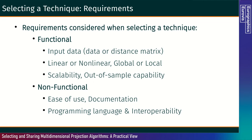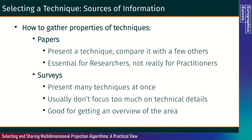We also have non-functional requirements such as ease of use, documentation, the programming language used in the implementation, and its interoperability. How do we gather these properties of techniques? First, we have papers, which present a technique and compare it with a few others usually. Papers are essential for researchers but not really useful for practitioners.